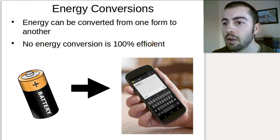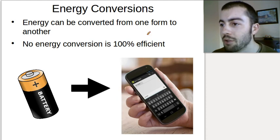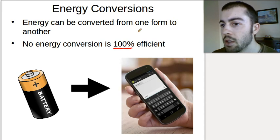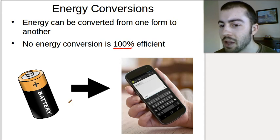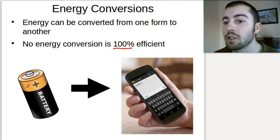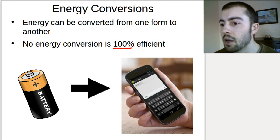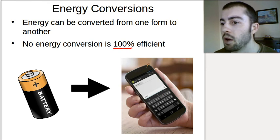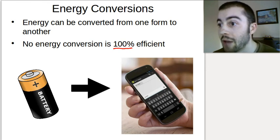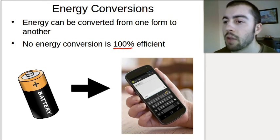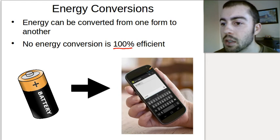It's important to know that in the real world, no energy conversion is 100% efficient. So if we have a battery powering our phones, the energy given off by the battery — we don't get that full amount to power our phone. It's close; we get a lot of that energy, but not 100% of it is given to the phone.